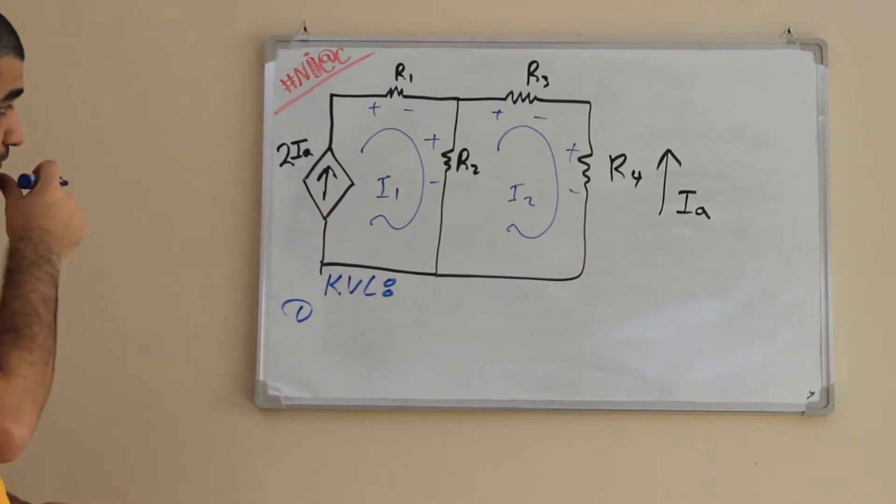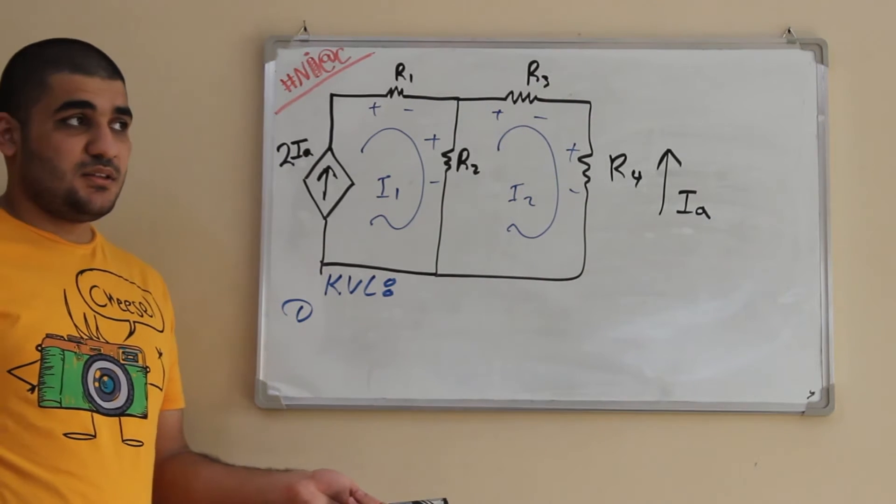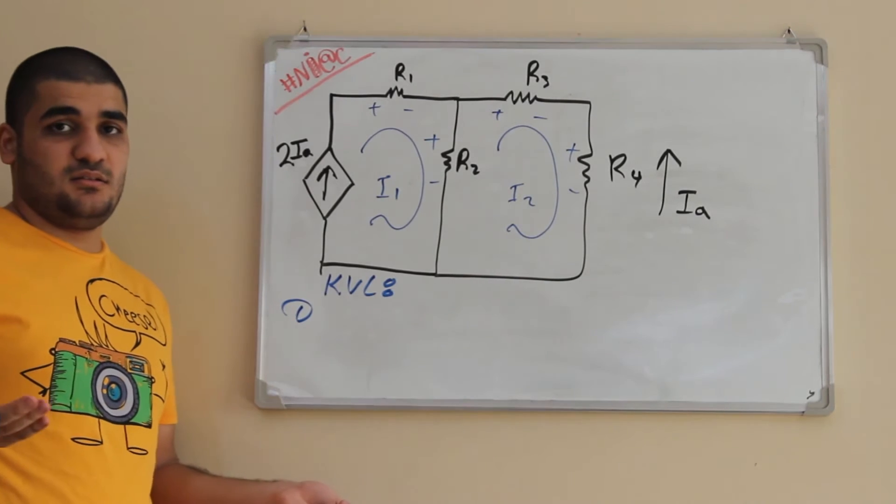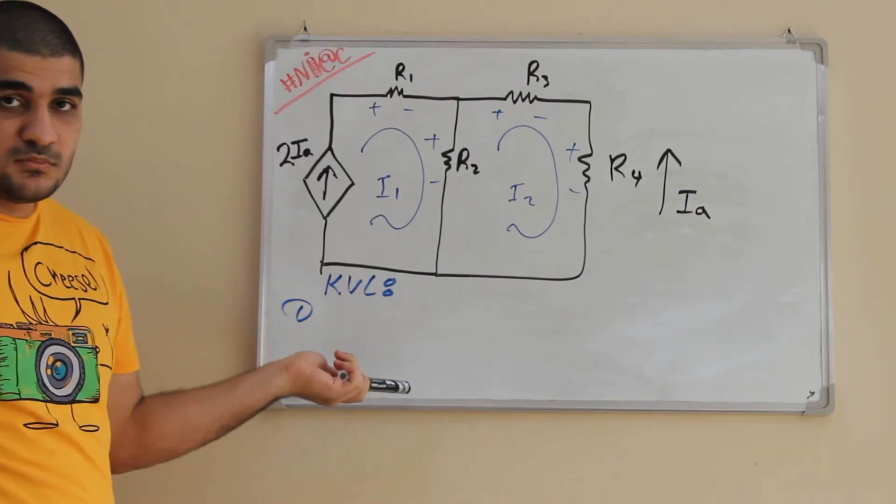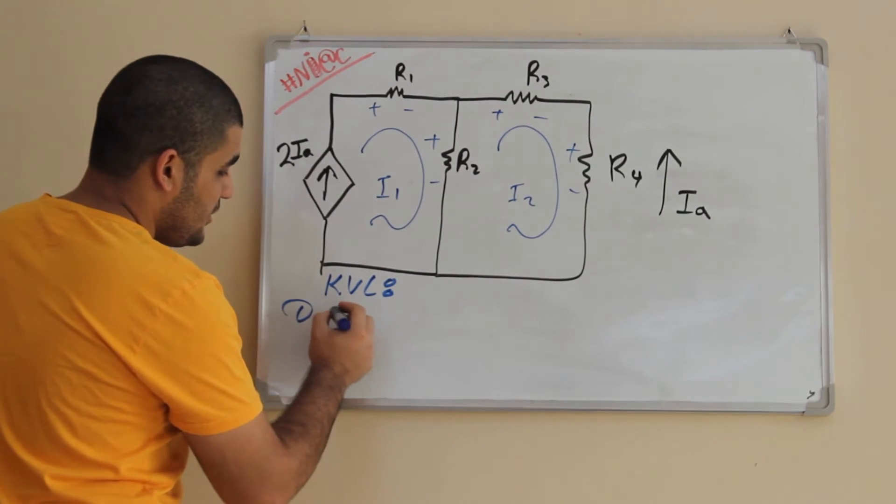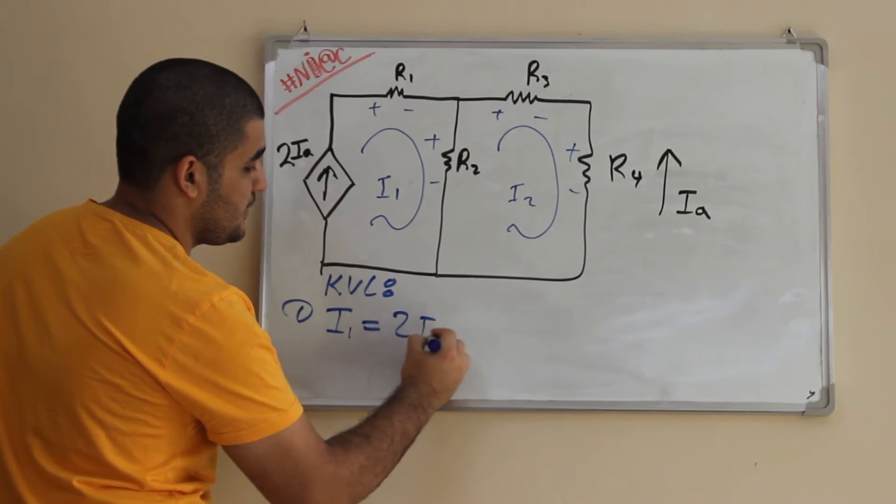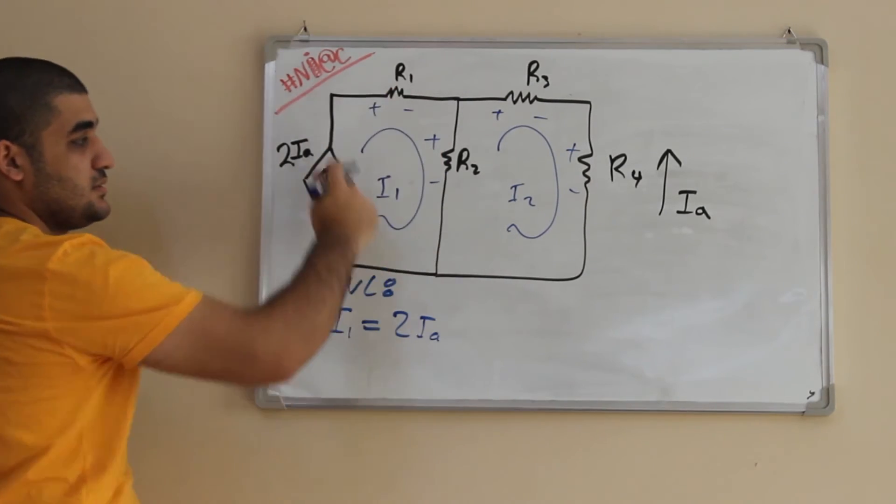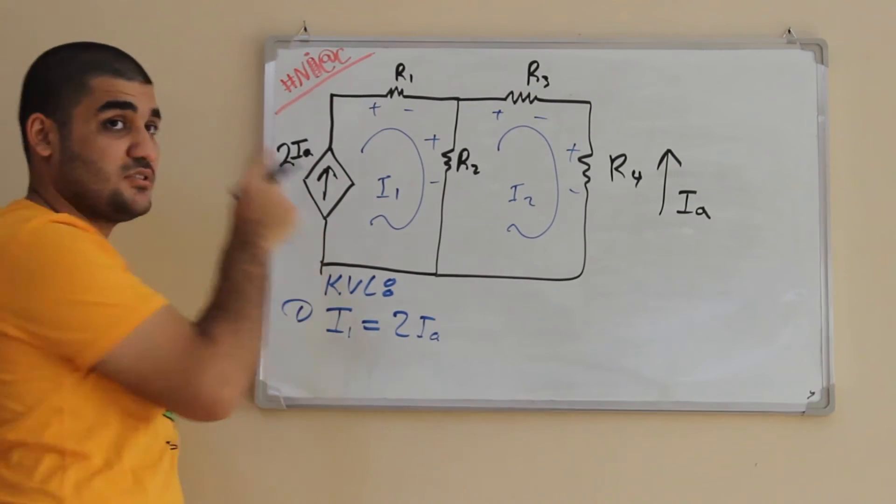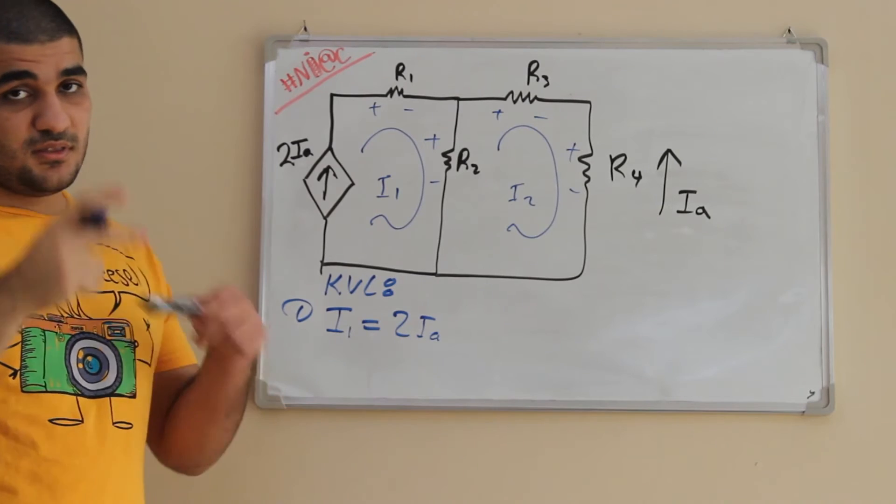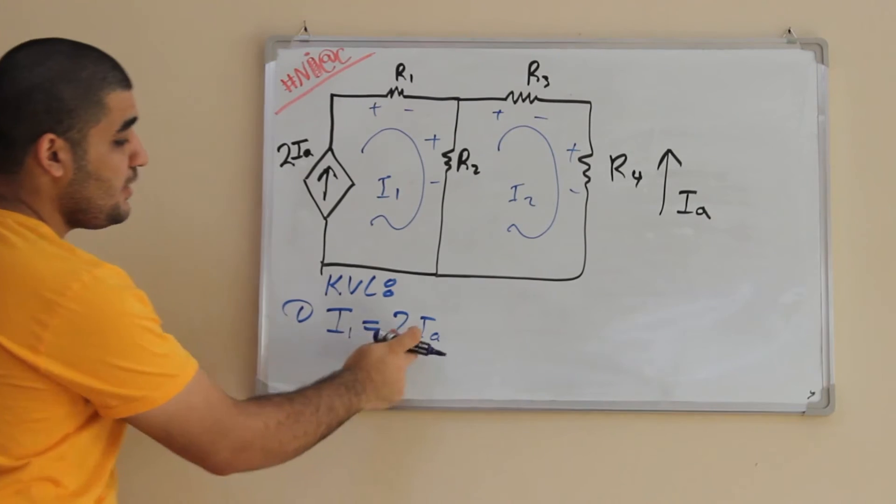For the first loop, actually there is no need to write any equation because I1 is 2IA. So it's already, we already know what's I1. I1 is equal to 2IA because it's in the same branch, in the same branch, right? And I have a current source. Don't be confused, this is a current source, not a voltage source. If it's a voltage source, the step is going to be different. So I1 is equal to 2IA.